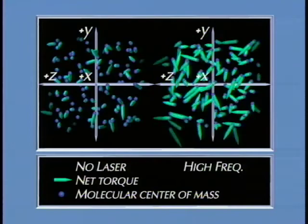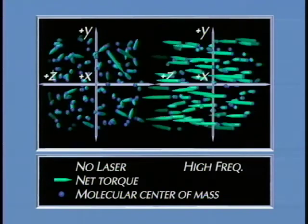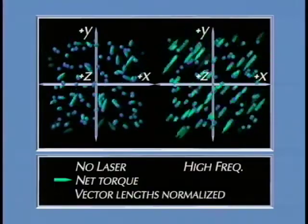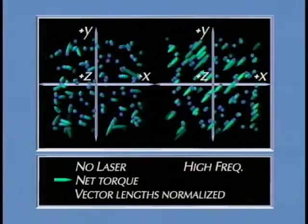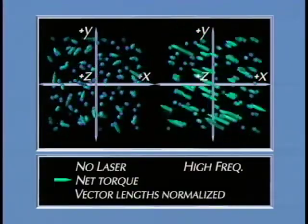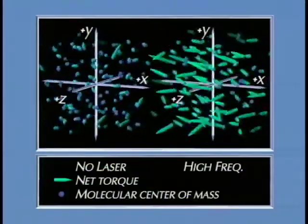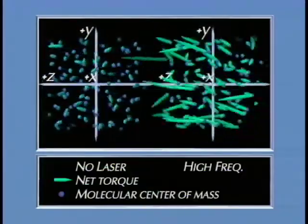In the baseline or no-laser condition shown on the left, we see only random thermal motion of the molecules and no correlation of net torque in the ensemble. In the presence of a high-frequency pulse laser, however, the precessional motion is clearly seen superimposed on the thermal background. This extra spin lasts only as long as the laser pulse.